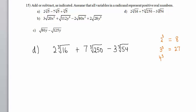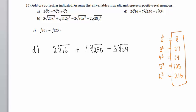4 to the third power is 64. 5 to the third power is 125. 6 to the third power is 216. This list of perfect cube numbers will be useful for simplifying the radicals.